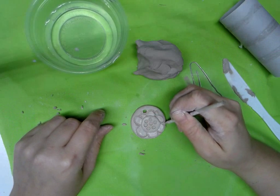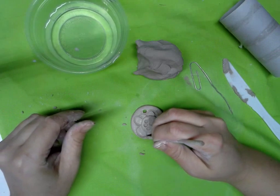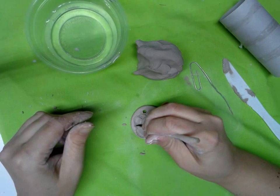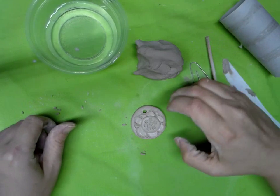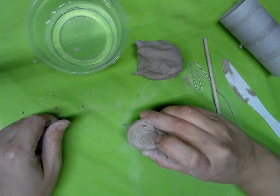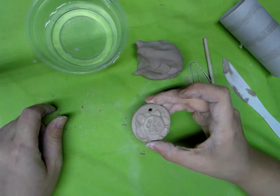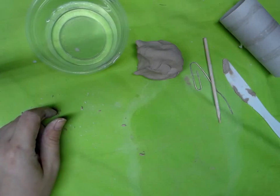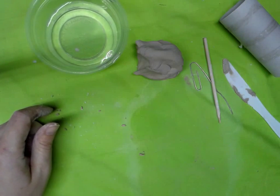You can use your tools in all different ways to make your designs and create them however you want, whether you want them sticking up or staying down in it. When you're completely done, make sure you can still read your name on the back. Then we'll put it to dry before we put it in the kiln.